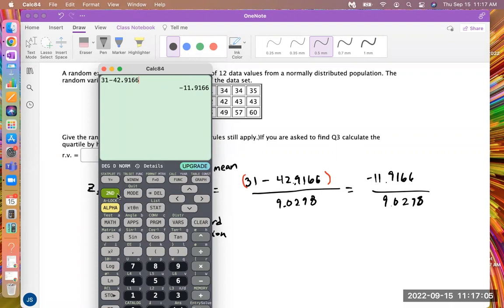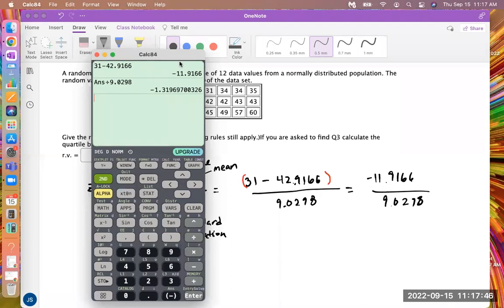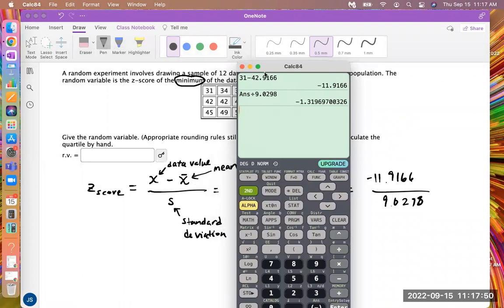Then I still have the 9.0298 in the denominator, and now I just divide that in my calculator. Usually you could do second answer, so it'll re-input this answer for us. What we can do is we can say second, and this answer means that it's going to take the last answer that you displayed on your calculator. So I'm going to take that answer, the negative 11.9166, and divide by the 9, my sample standard deviation, 9.0298. And then press enter, and then there's my z-score, negative 1.31.